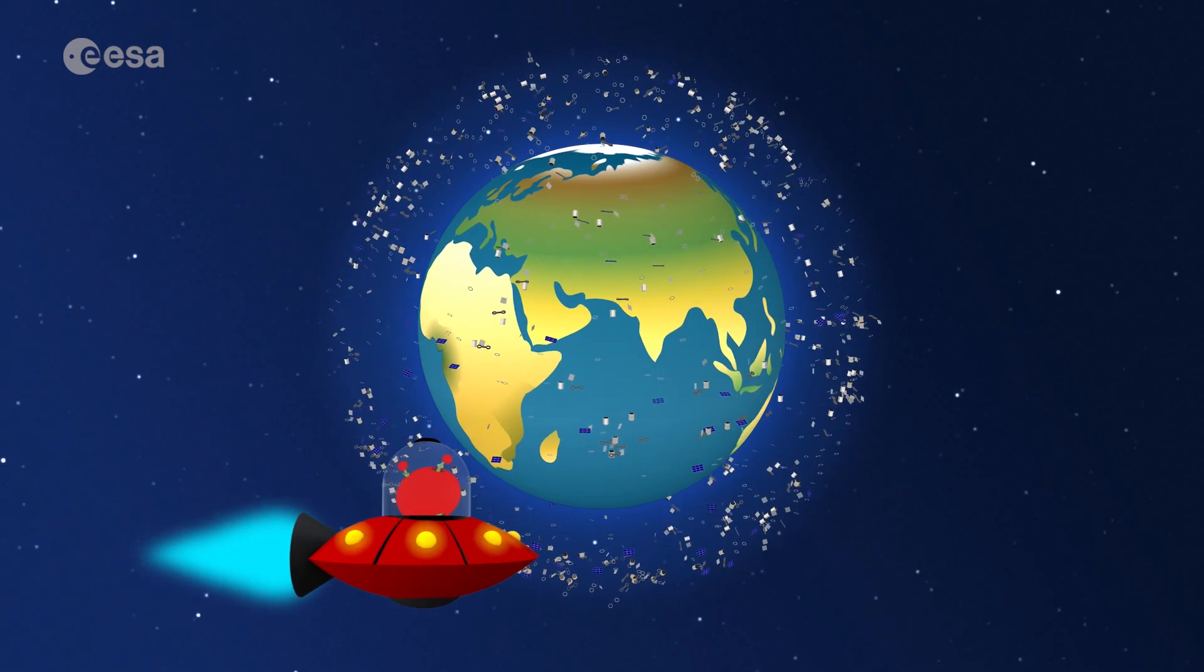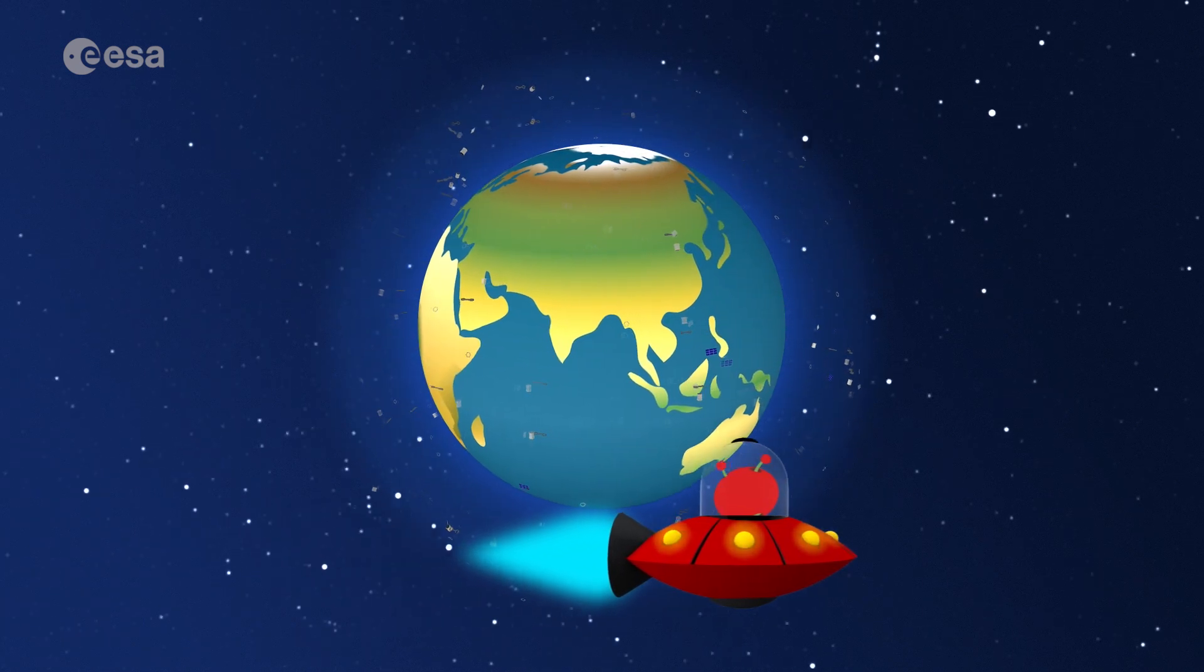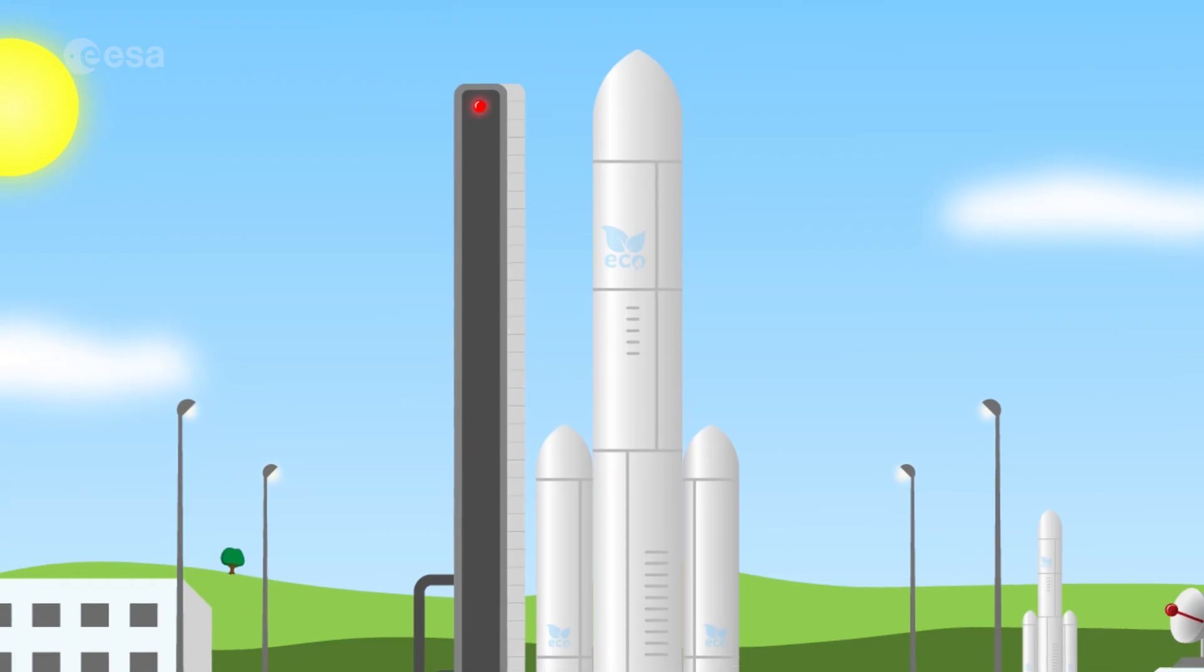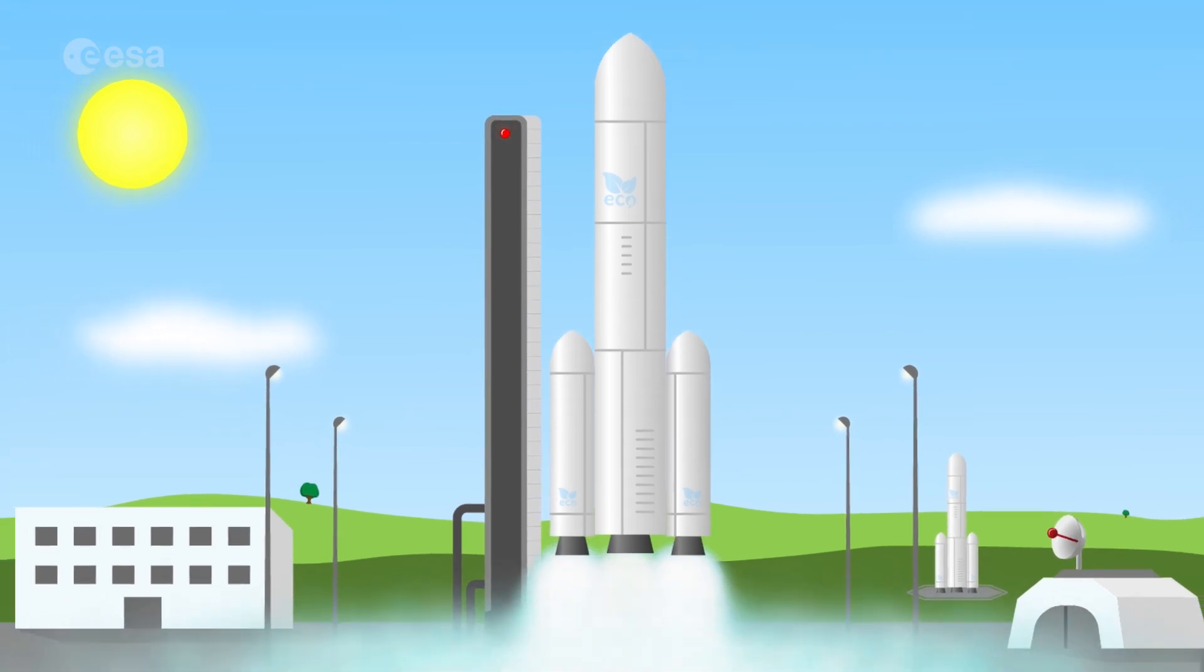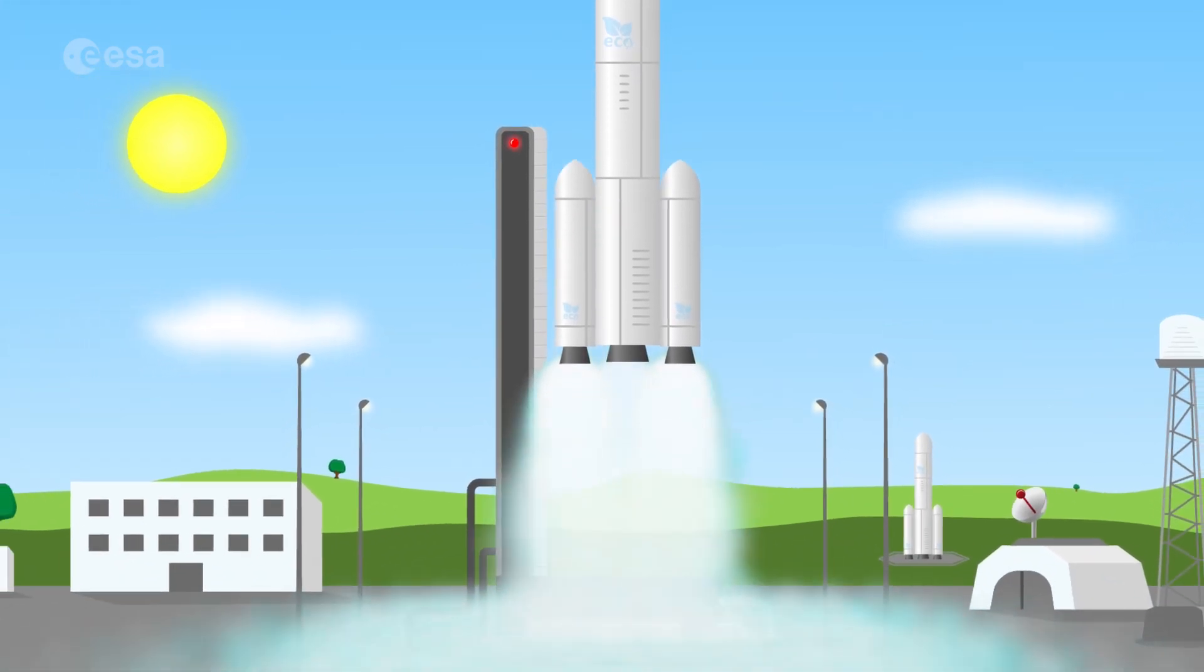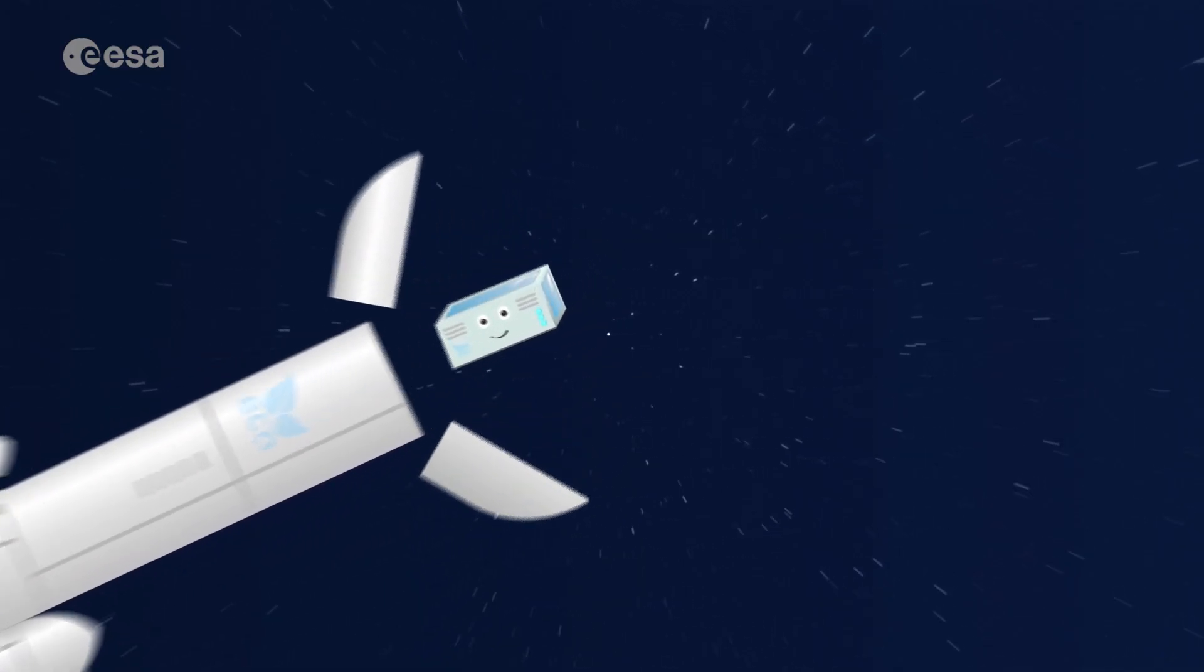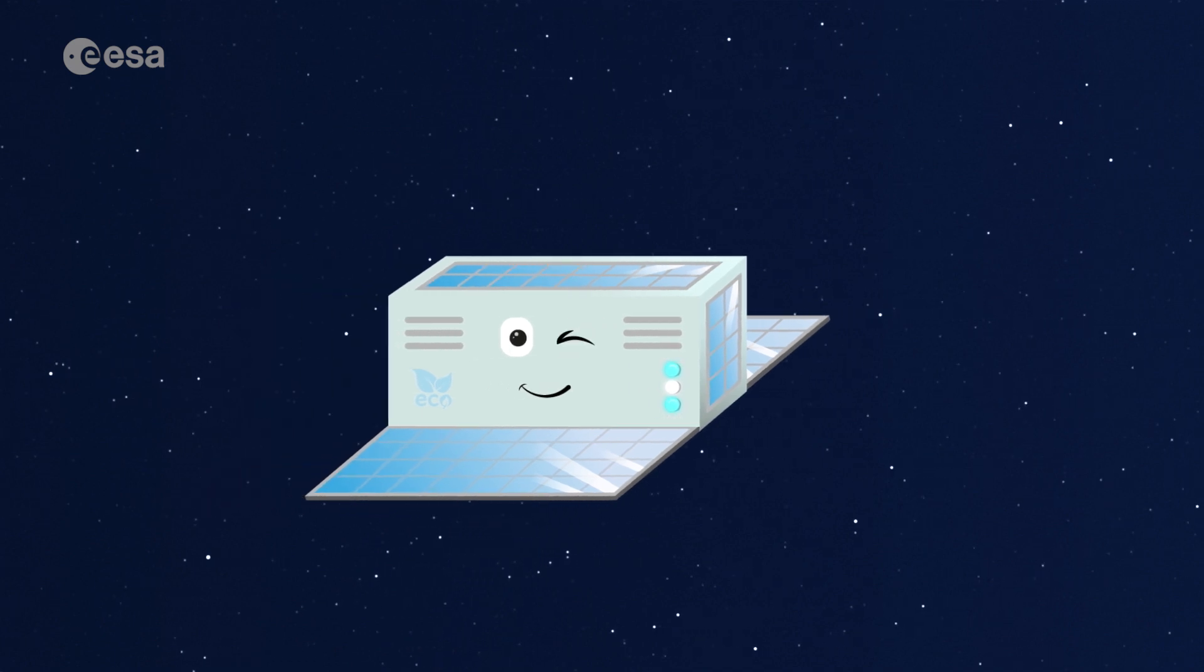All this makes me think that we need to keep Earth orbits as clean as possible from space debris so that all our satellites can work at their best. We also need to take care of Earth in every way possible, my friends. We need to find more eco-friendly ways to lift our rockets and to design and build our spacecraft so they continue to protect Earth without contaminating it.